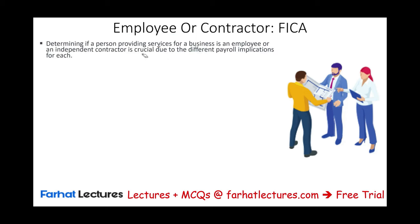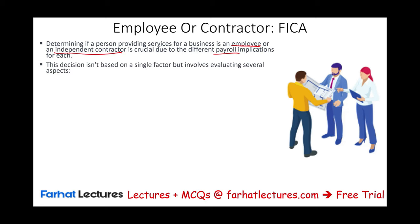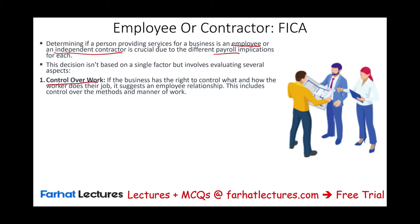Let's start by determining if a person providing a service for a business is an employee or an independent contractor, because it makes a difference to payroll. The IRS would look at factors such as who controls the work. If the business has the right to control what and how the worker does their job, it looks like we have an employee. If the company tells you exactly what to do, at what point, and how to do it, then you are an employee. A contractor, on the other hand, is told what needs to be done and goes ahead and does it — they have more control.